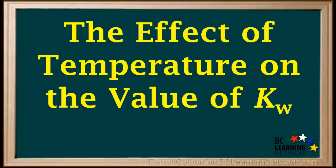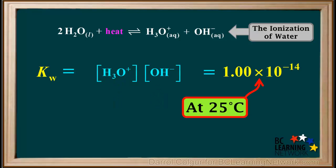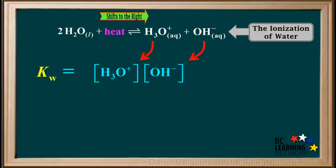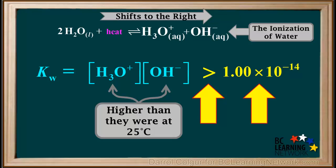Now we'll examine how temperature affects the value of Kw. Remember, Kw is the product of the concentrations of hydronium and hydroxide. At 25 degrees, the value of Kw is 1×10⁻¹⁴. But if we increase the temperature above 25 degrees, the equilibrium shifts to the right, so the concentrations of hydronium and hydroxide are both higher than they were at 25 degrees, and their product, Kw, will be greater than 1×10⁻¹⁴.